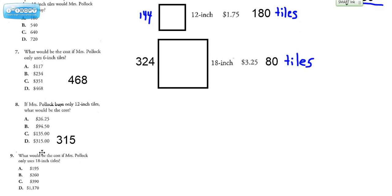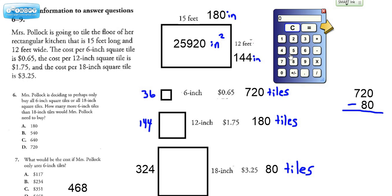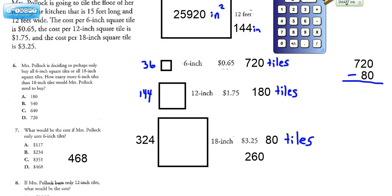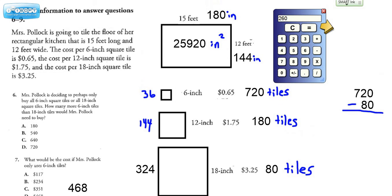And number nine, what would the cost be if Mrs. Pollack only uses 18 inch tiles? We need 80 tiles. We're going to do 80 times the, it's $3.25. And we get $260. And that matches choice B. All right. Hopefully you found this video helpful.